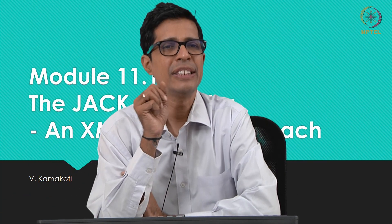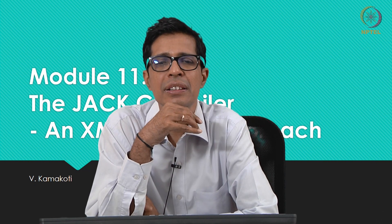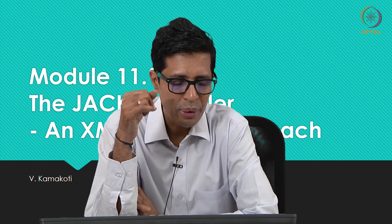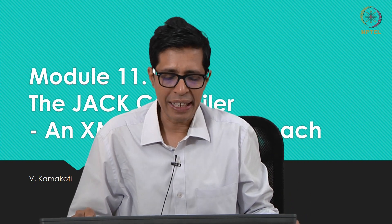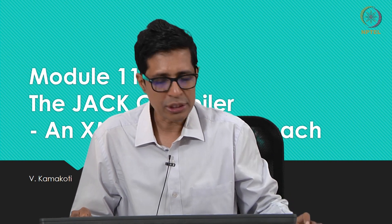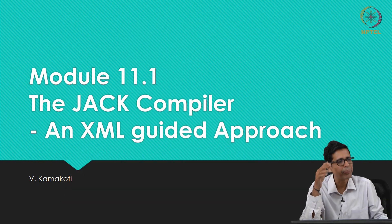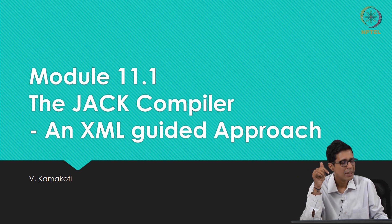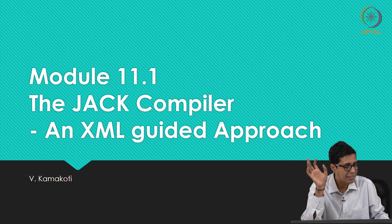Welcome to module 11.1. We start the JAG compiler — we have already seen the theory behind compiling JAG programs, and what we now need to see is how do we actually generate the code. The entire JAG compiler will be an XML-guided approach, and we have already created an XML file for it as part of a previous project. Now we will be using that XML file to actually generate the code.